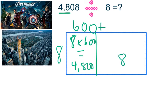So now I'm thinking, how do I get to 8? 8 times what equals 8? Oh yeah, 8 times 1 equals 8. So then I would have 1 up top. So now my answer would be 600 plus 1, which would equal 601. So each of the Avengers saved 601 people.